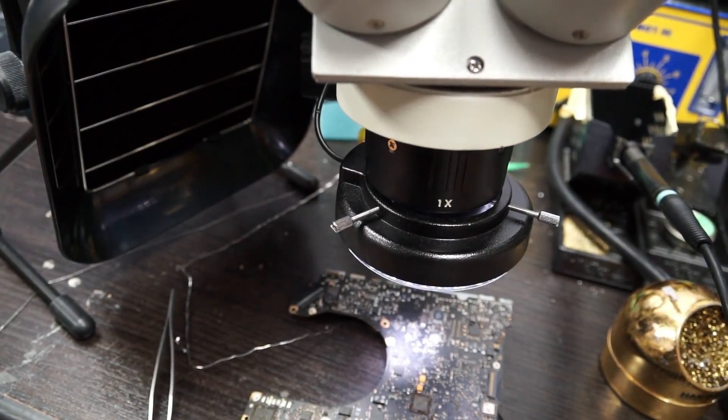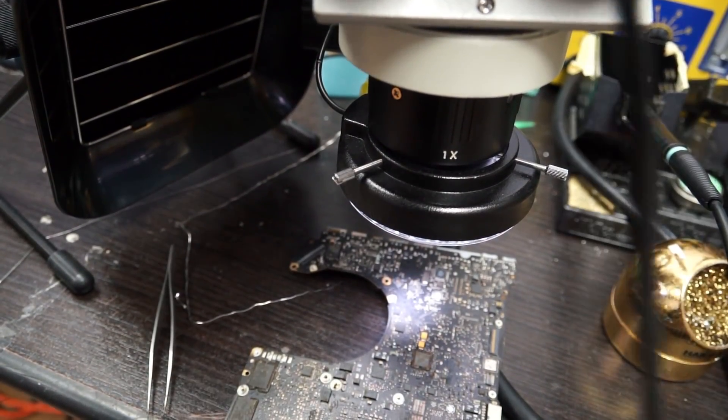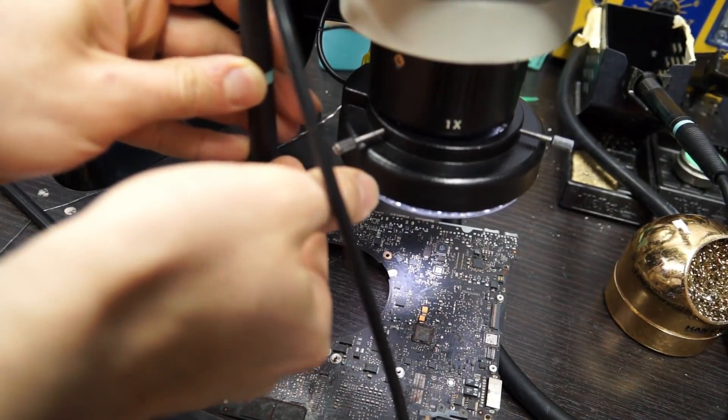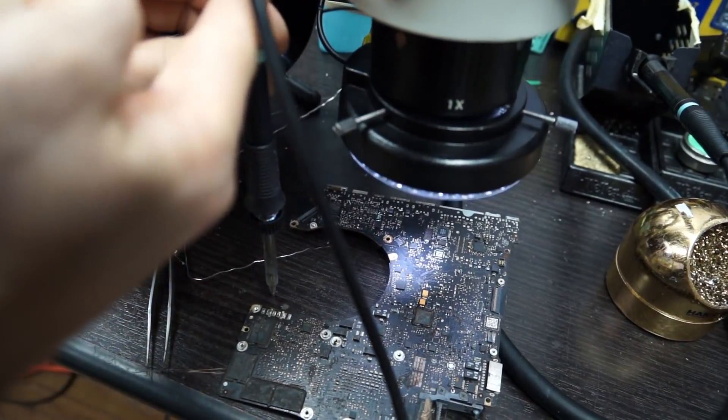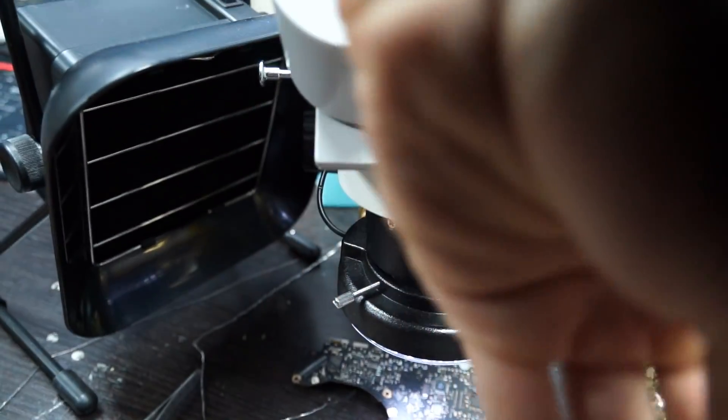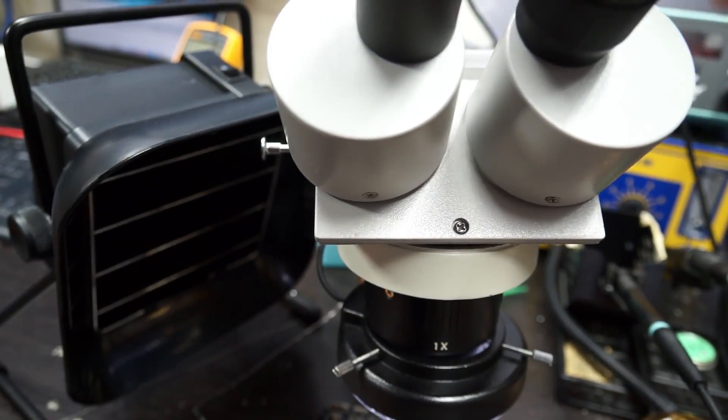But look at the working range I have between the board. This is a board I was stealing stuff off of anyway. Never mind the fact that it looks like dog shit. But you see this? From the table to here, look at this. From here is all I have. All this space up here I can't use because the microscope itself doesn't have that range. I have to be very close to the item in order for it to be in focus in that microscope.